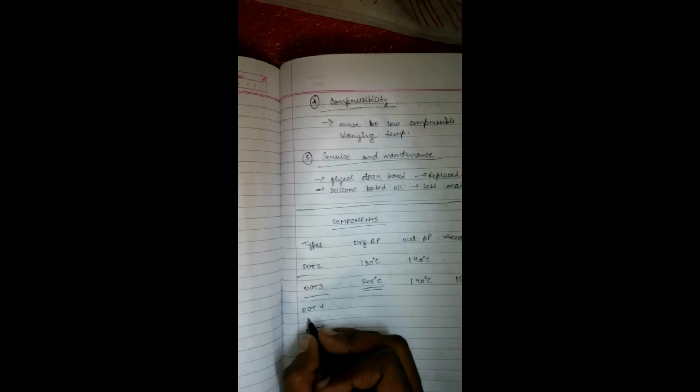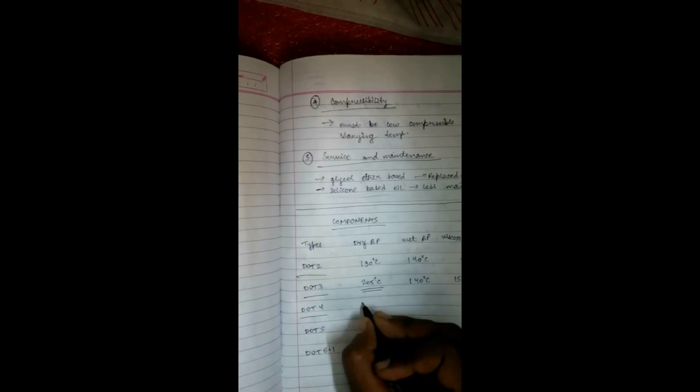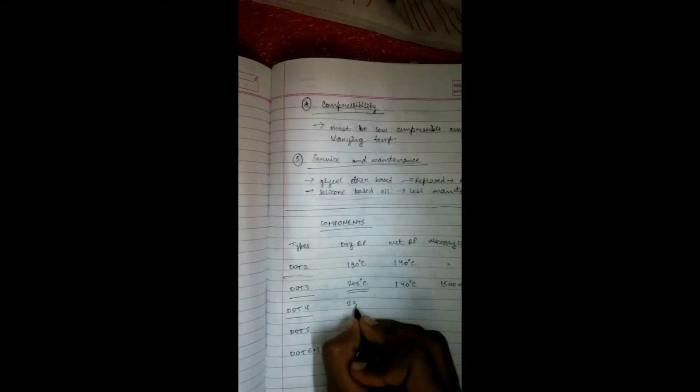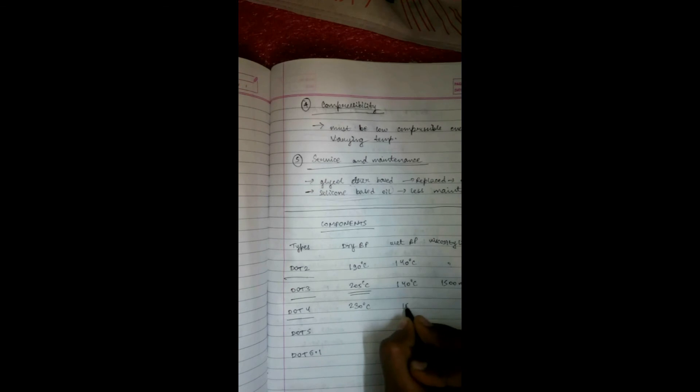For DOT 4: dry boiling point is 230°C, wet boiling point is 155°C, viscosity limit is 1800 mm²/s. Primary constituents are glycol ether or borate ester.